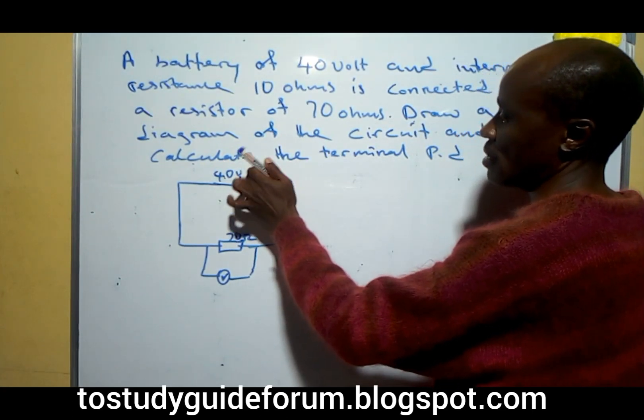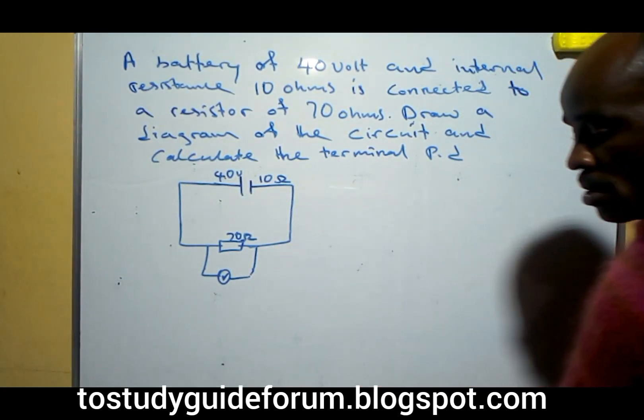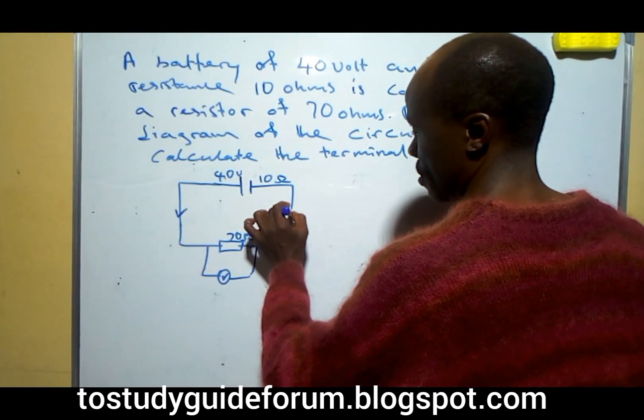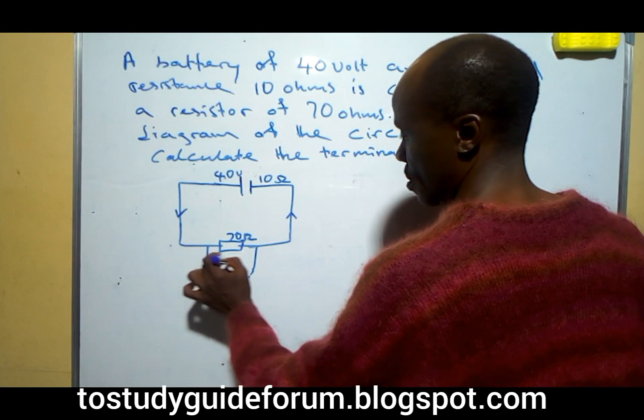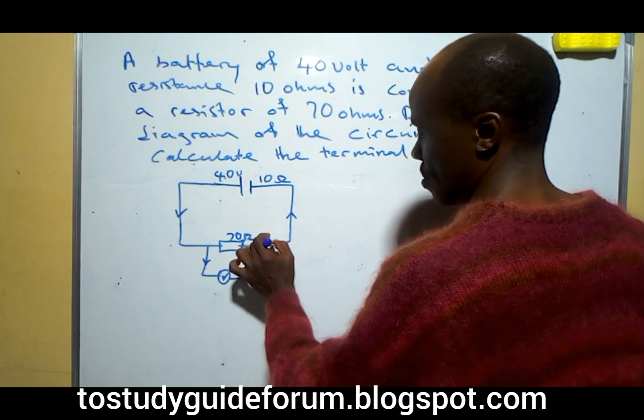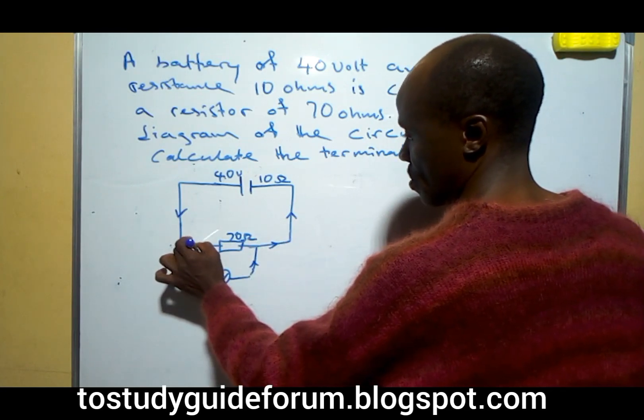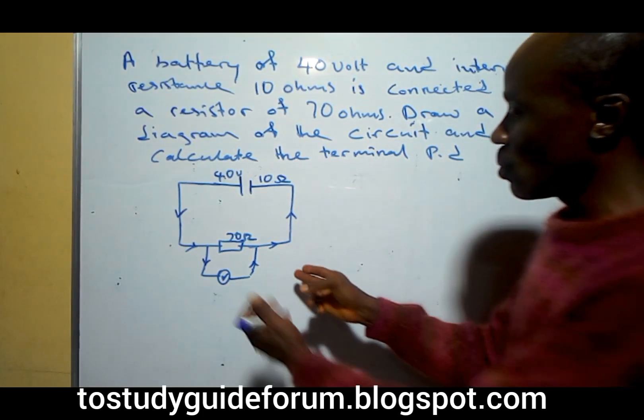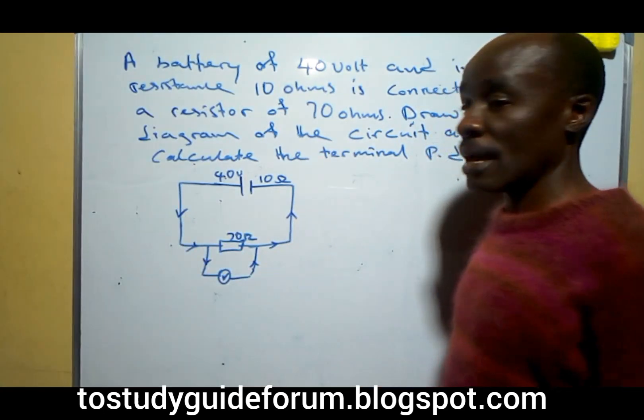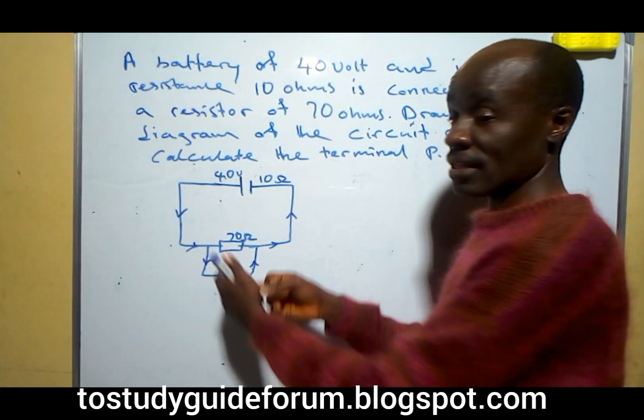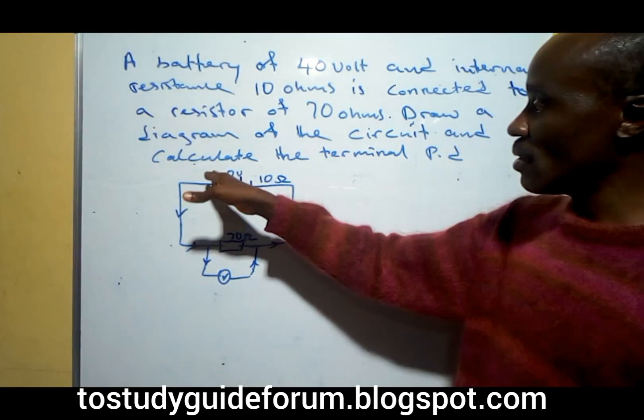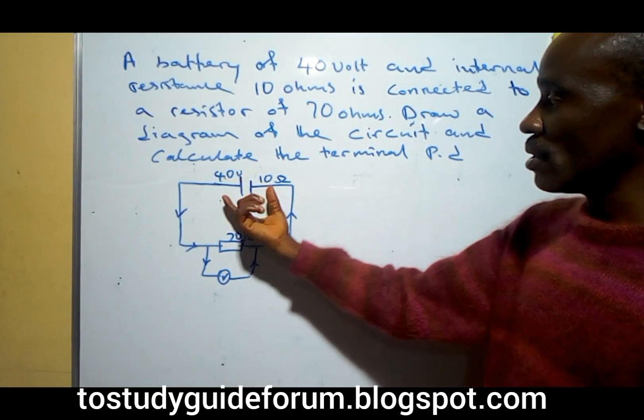A little like this, and then this is what it looks like. So this is the terminal PD, now, across the terminals, the potential difference across the terminals, that is the terminals, and this other one is the one, the volt here is the one inside itself.